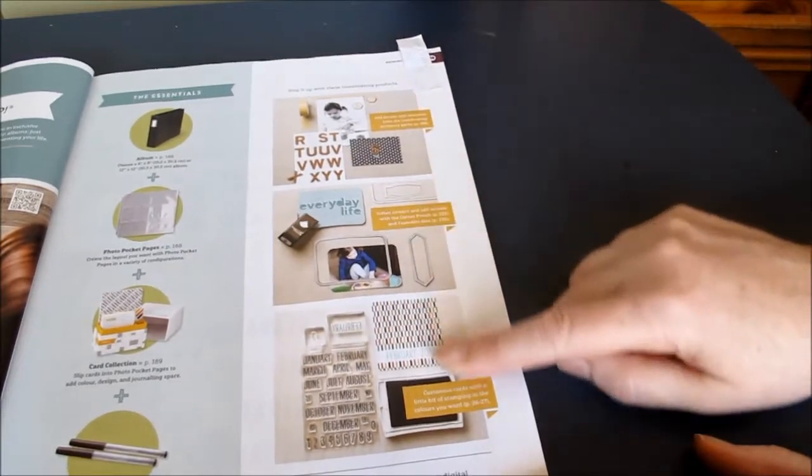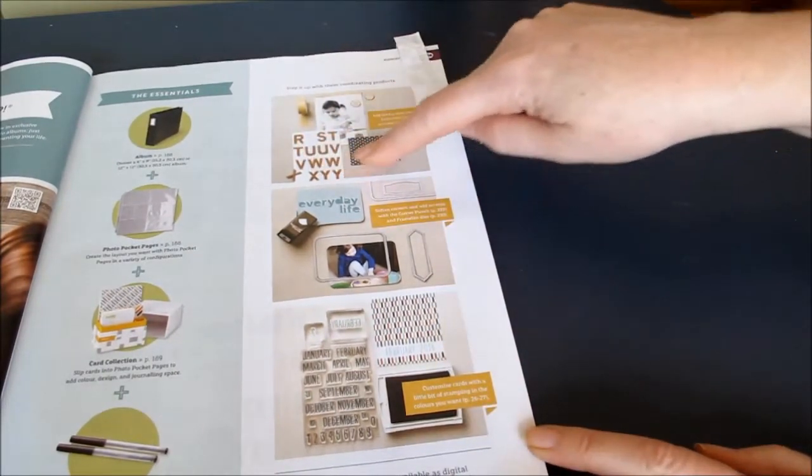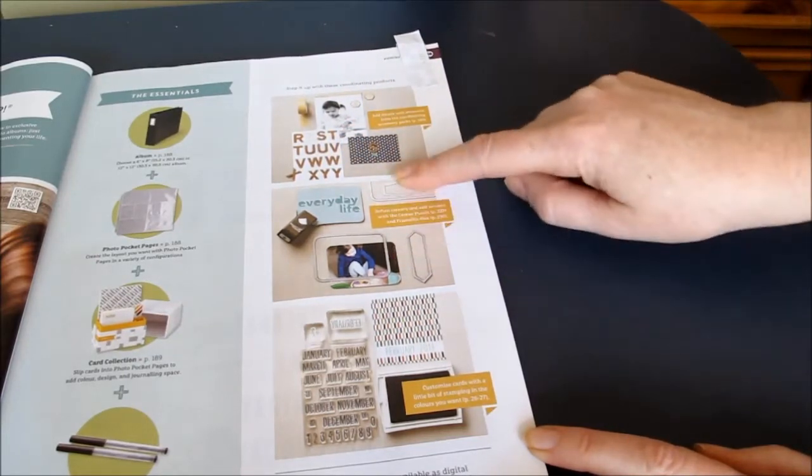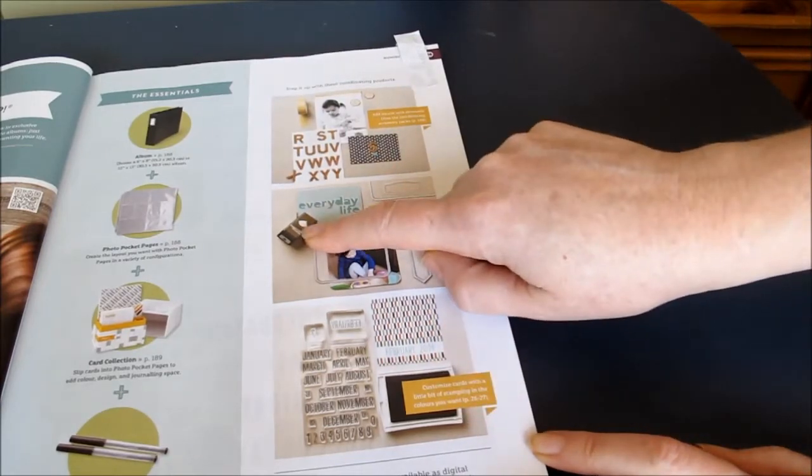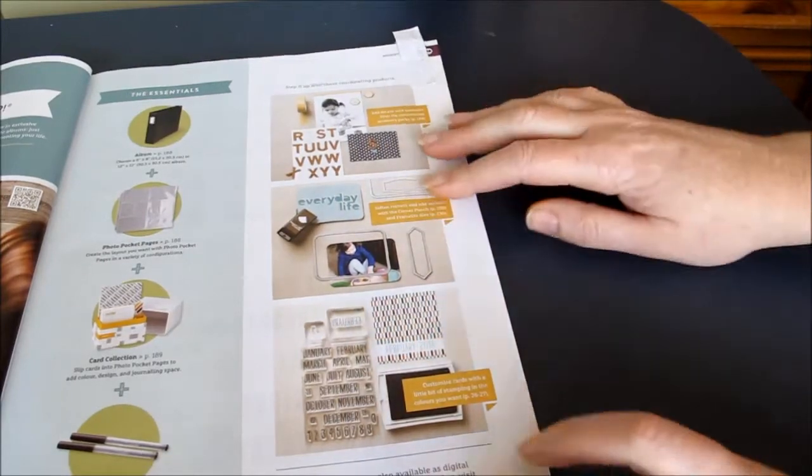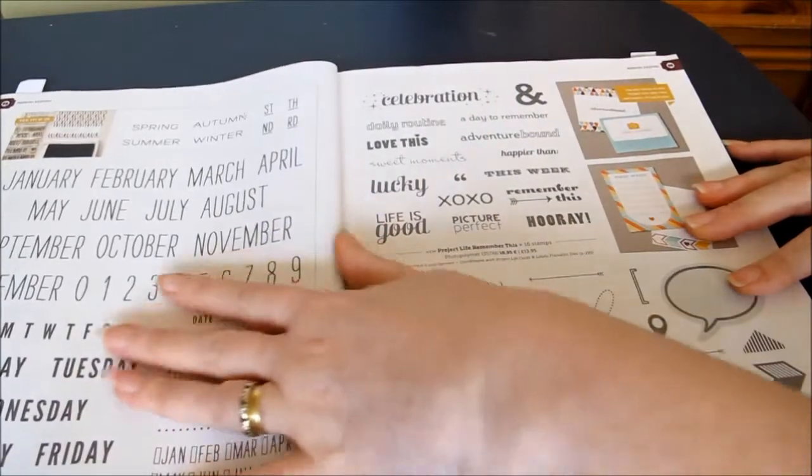Then you've got a few examples here including some of the other things that are available. What's available in the accessories pack. There's also a die cutting set available for project life. And a corner rounder, mini corner rounder. And there's also stamps available.